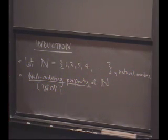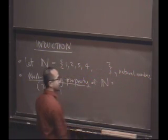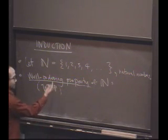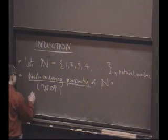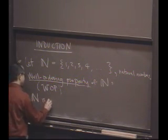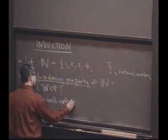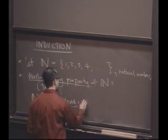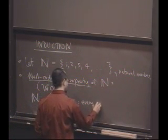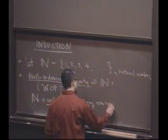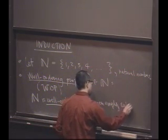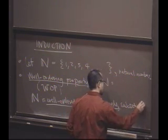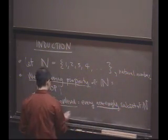So what is the well-ordering property of the natural numbers? And if you don't mind, I'm going to abbreviate this by WOP. The well-ordering property of the natural numbers says the following. It says that N is well-ordered. So I have to tell you what that means. So what does it mean for a set to be well-ordered? Well, it means that every non-empty subset of the natural numbers has a least element.